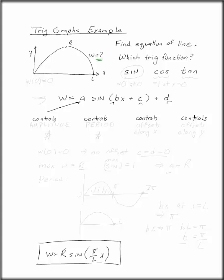First of all, which trig function are we going to need? We know that w at zero is going to have to equal zero. Which trig function is this most like? Tangent is zero at zero, but goes off to infinity, and this does not.